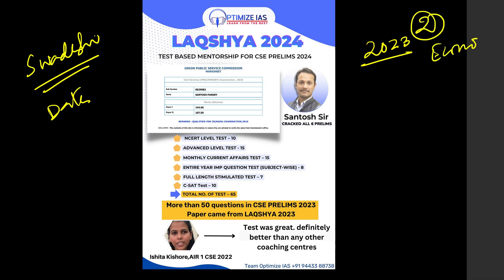Previously we used to say that facts are not that important for the Prelims examination, but now UPSC is focusing on facts — like what percentage is groundwater, or what is the export share of the Indian economy in the world economy. These kinds of facts UPSC is now using to frame questions. So in the history section, particularly in Modern India, these dates I have shared are very important — please go through them.